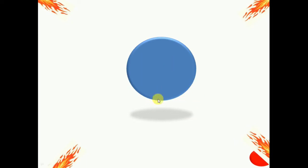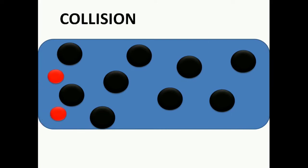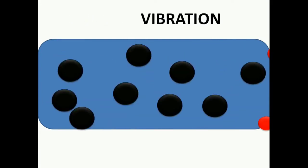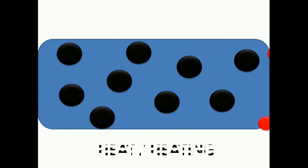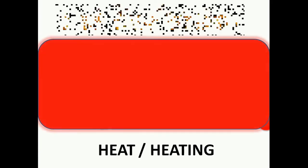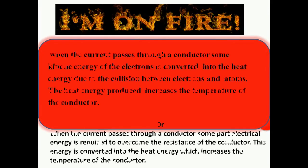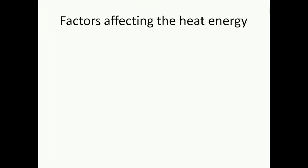In this case, the electrical energy of electrons is converted into heat energy. As you can see in the picture, electrons are colliding with atoms, causing the atoms to start vibrating. When they vibrate, the conductor heats up. You can pause and copy this. Now we will understand the factors affecting the heat energy produced by a conductor.